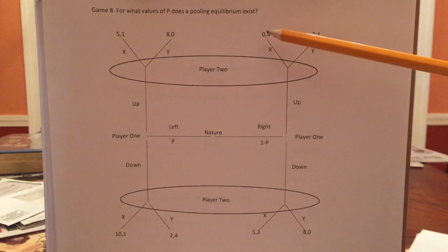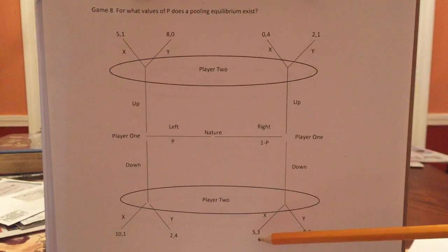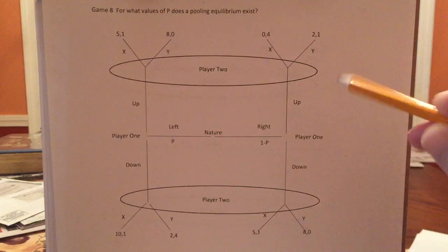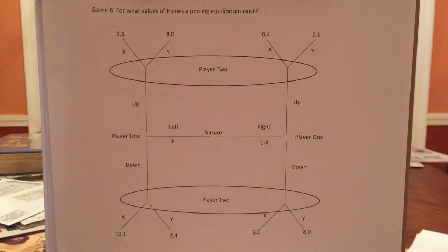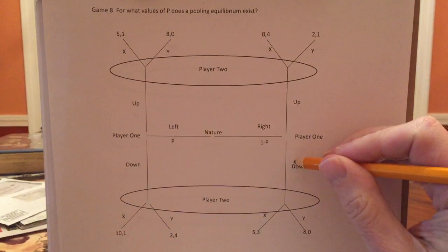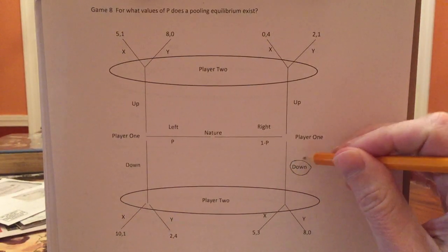What about righty? Up could give you zero or two. Down could give you five or eight. Yup. Righty has a dominant strategy of down because down at worst gives you five, whereas up at best gives you two. So we'll put a D right here.